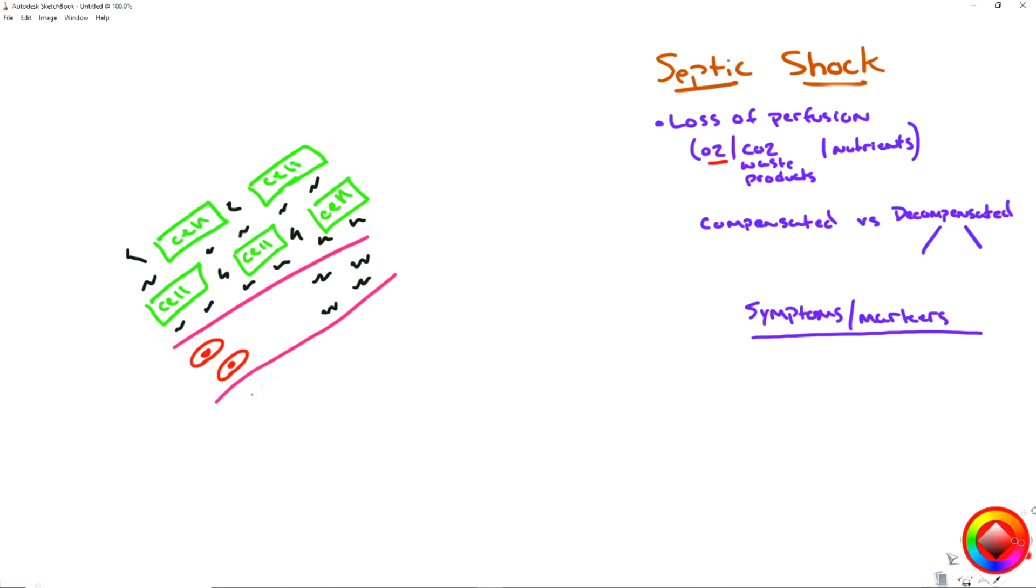So we have in pink here, our vessel, our artery, our vein, our capillary, arterial, venule, doesn't matter. Whatever vasculature we're talking about. And the first thing we want to remember is that sepsis is not a local problem. It is a systemic problem. So systemic is just everywhere. It's everywhere in the entire body. So when this is happening, don't just think it's happening in the left bicep. It's happening everywhere all at once.